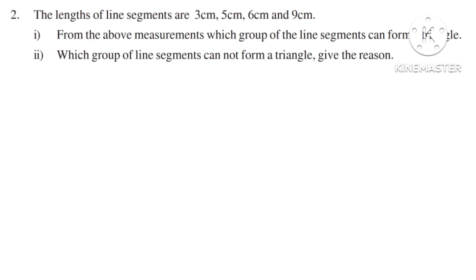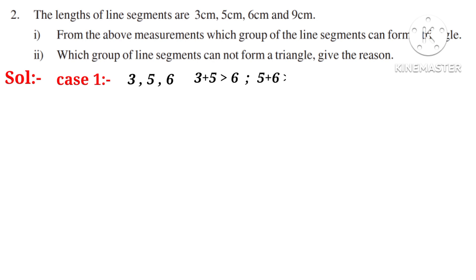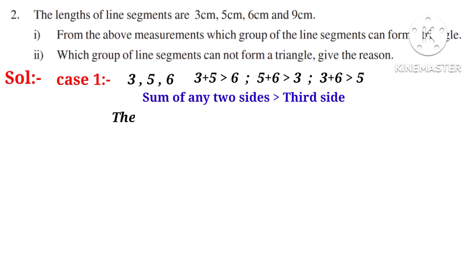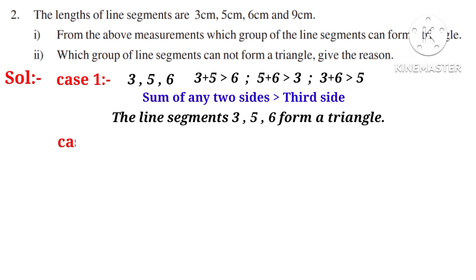Second problem: the lengths of the line segments are 3 cm, 5 cm, 6 cm, and 9 cm. Which group can form a triangle, and which cannot? Case 1: take 3, 5, 6. We observe that 3 plus 5 is greater than 6, 5 plus 6 is greater than 3, and 3 plus 6 is greater than 5. So the sum of any two sides is greater than the third side. Therefore the line segments 3, 5, 6 form a triangle.